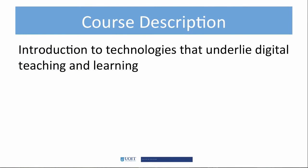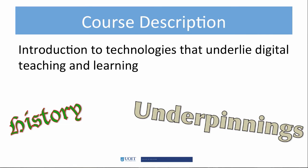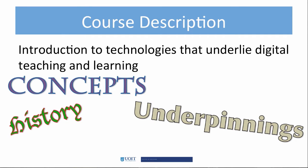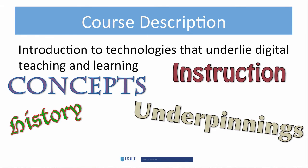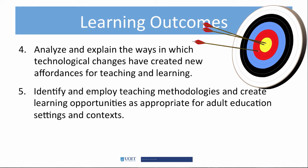The purpose of this course is to introduce you to the technologies that underlie digital teaching and learning. We'll look at the history of computing, the technological underpinnings of digital technologies such as binary codes, and also we'll look at programming concepts, and early uses of computing in support of learning and computer-assisted instruction. We'll also examine the impact of major technological developments in digital learning technologies. There are five learning outcomes for this course. In the first three, you'll become familiar with the history of computing and its impact on modern computing. The next two learning outcomes speak to your ability to analyze, explain, identify, and use various technologies in adult education settings and contexts.